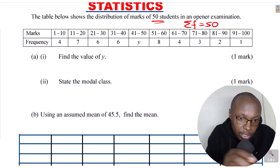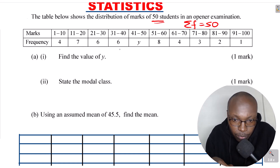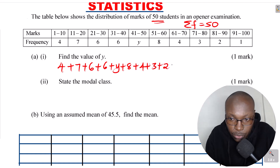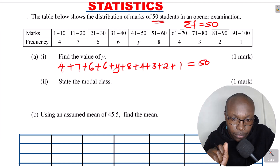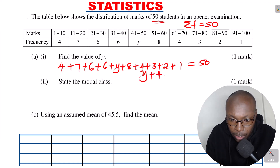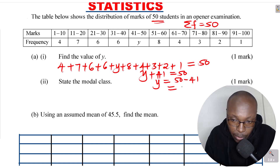Using a calculator, we add: 4 plus 7 plus 6 plus 6 plus 6 plus y plus 8 plus 4 plus 3 plus 2 plus 1, and everything should give us 50, the total frequency. Adding all the known values — 4 plus 7 plus 6 plus 6 plus 8 plus 4 plus 3 plus 2 plus 1 — you get 41. So y plus 41 equals 50, therefore y equals 50 minus 41.